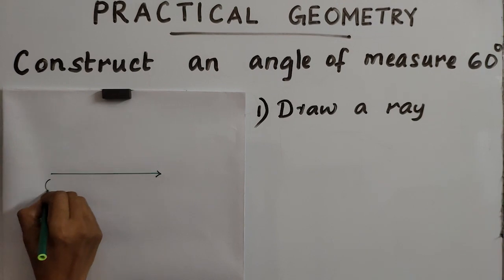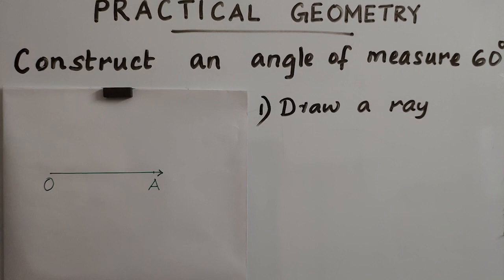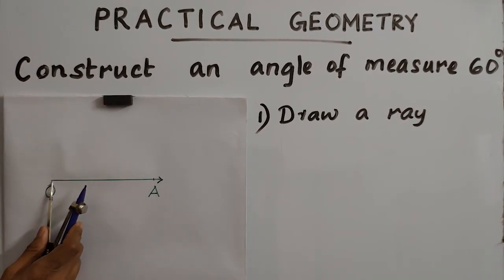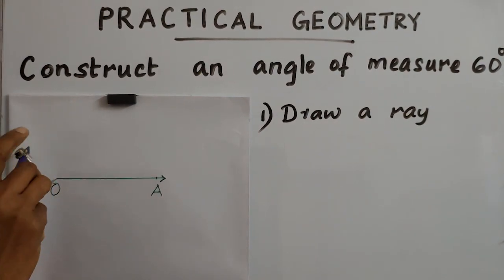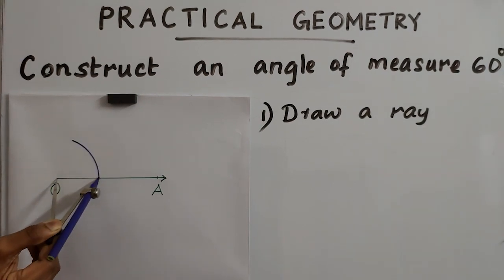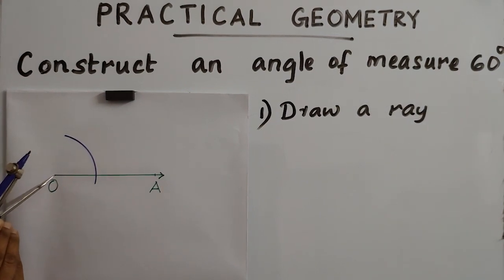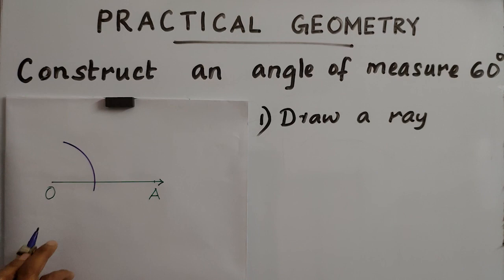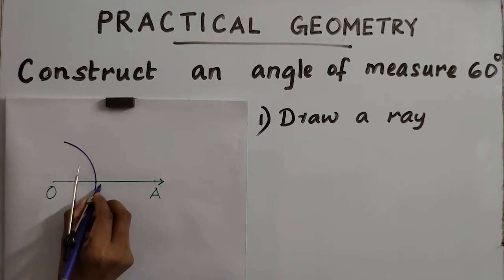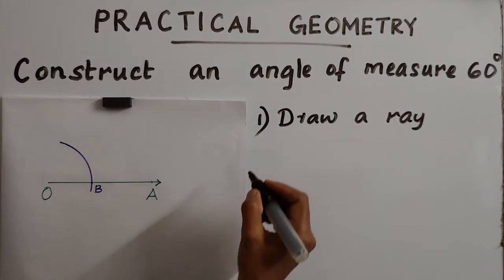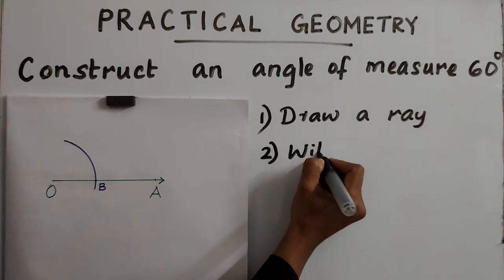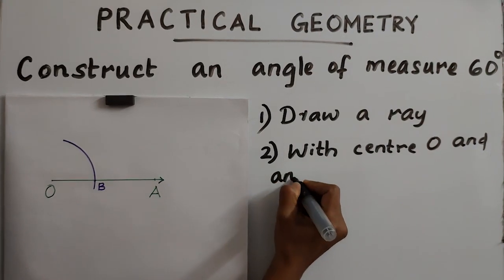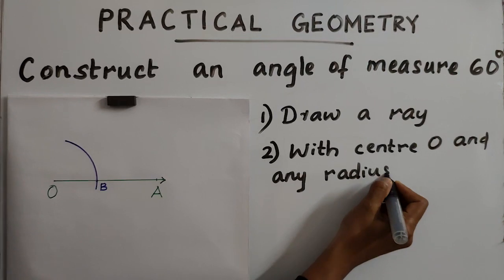You can name it as OA. Next, with the help of compasses, select any measure and place the metal tip on O and draw an arc. The arc meets the ray at B. So step 2 is: with center O and any radius, draw an arc.